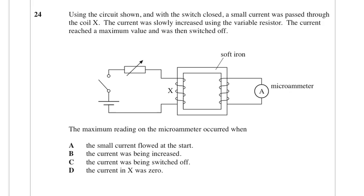Using the circuit shown, with the switch closed, a small current was passed through the coil X. The current was slowly increased using the variable resistor. The current reached a maximum value and was then switched off. The maximum reading on the microammeter occurs when... We're looking for the situation in which the rate of change of flux was greatest. That's going to be when you switch it off, because it's gone from very high to very low very quickly. So the rate of change is going to be maximum at that point.